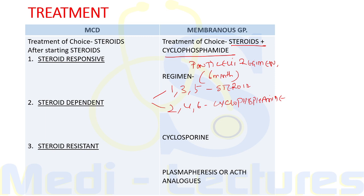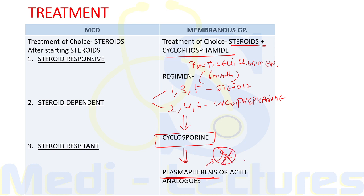If the patient is not responsive to the Ponticelli regimen, we give cyclosporine, a calcineurin inhibitor. If still unresponsive, the final treatment for refractory cases is plasmapheresis to remove IgG antibodies, or ACTH analogues like cosyntropin to stimulate endogenous steroids.